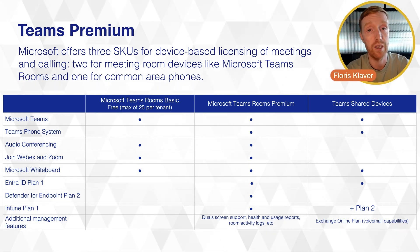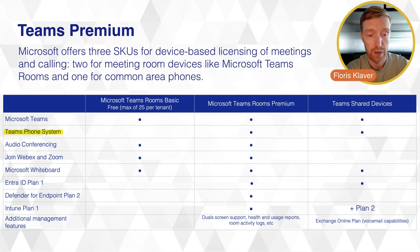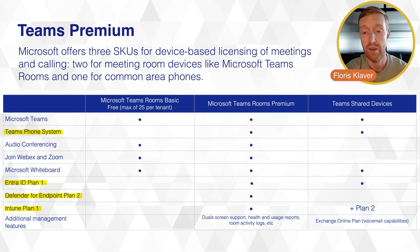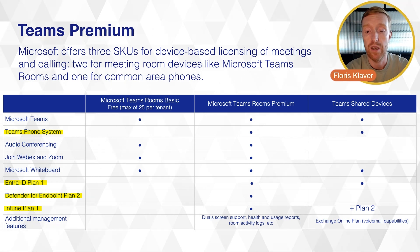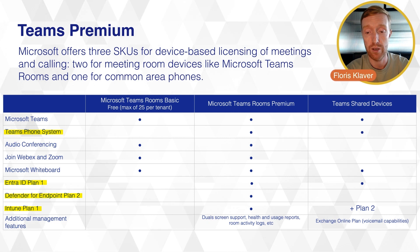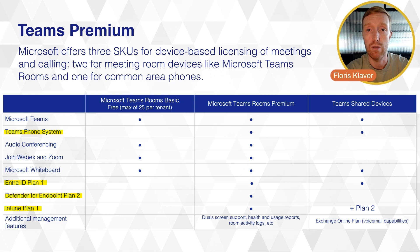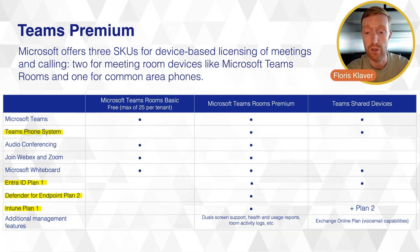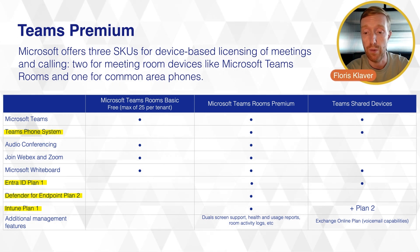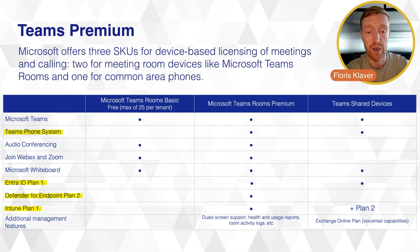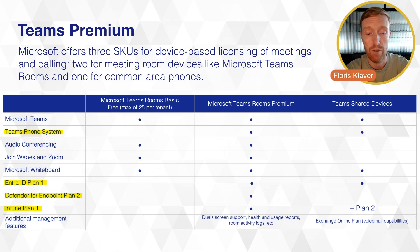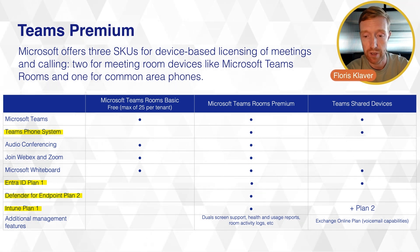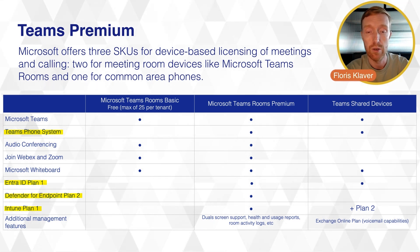Teams Rooms Premium does include certain functionality you might need, like a phone system, and security features such as Entra ID Plan 1, Defender for Endpoint Plan 2, and Intune Plan 1. Microsoft also has Teams Shared Devices, which used to be called Common Area Phone. Teams Shared Devices is for personnel within your organization that share devices — for instance, a secretary who is the host of your company shares a device with other company secretaries, helping visitors sign in and access the correct people in your organization. It's limited in functionality; it doesn't contain audio conferencing or joining Webex and Zoom, which typically aren't use cases for these services.